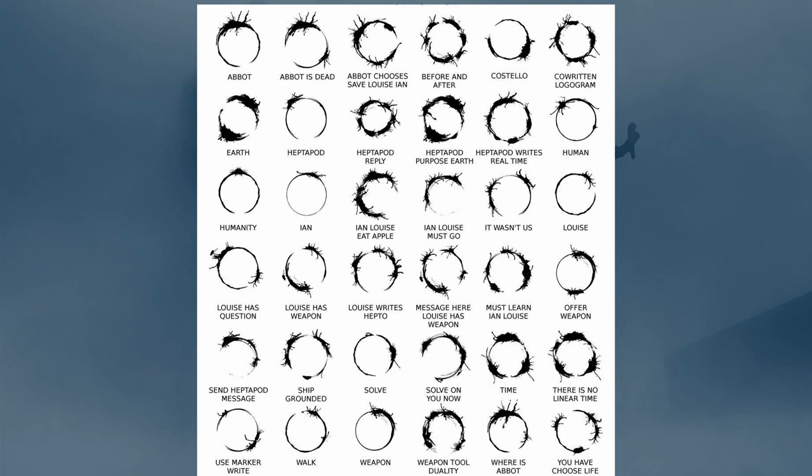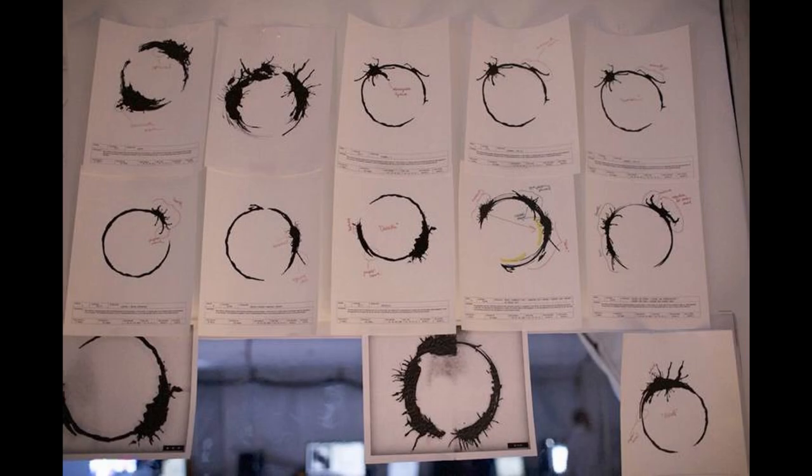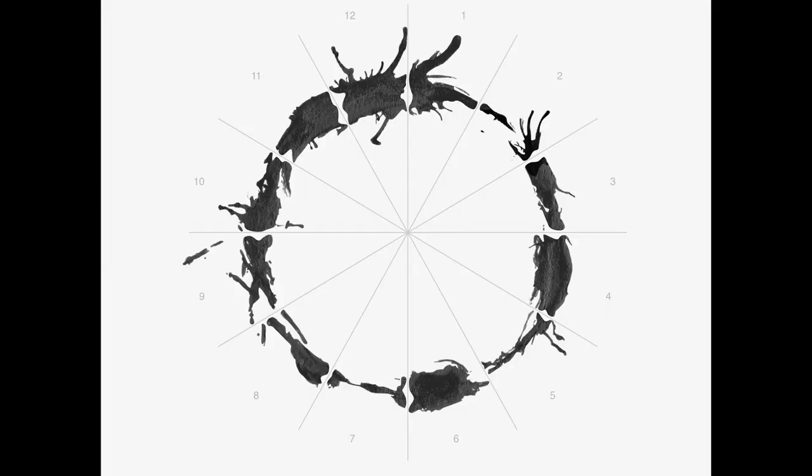These circular designs were created by Martine Bertrand, wife of the film's production designer Patrice Vermette. In the movie, Dr. Louise Banks the linguist looks for patterns in these logograms to ascertain some meaning. Each logogram is divided into 12 segments — 12 was also the number of alien ships that appeared on Earth in the movie. Each of these sections has some supposed meaning that makes for a complete sentence, but the idea was just to find the patterns of representation, whether it meant something or not.